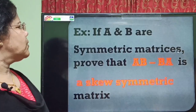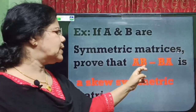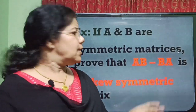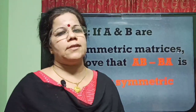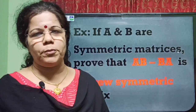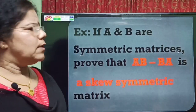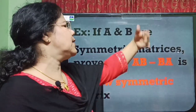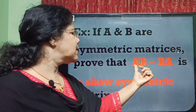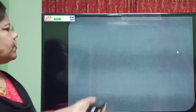Now one problem: if A and B are symmetric matrices, prove that AB minus BA is skew-symmetric. If A and B are symmetric, A-transpose equals A and B-transpose equals B. To prove AB minus BA is skew-symmetric, we must prove AB minus BA whole transpose equals negative of AB minus BA.